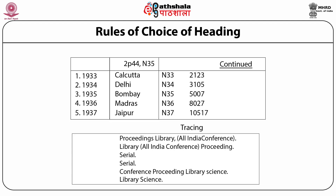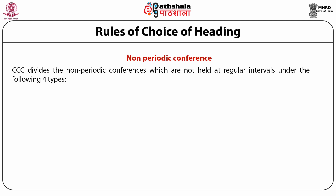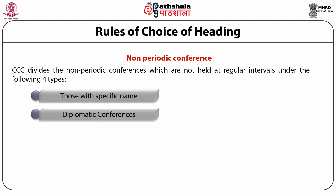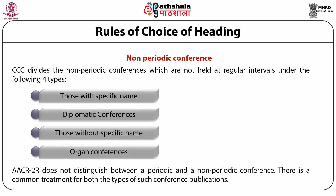The second type is the non-periodic conference. CCC divides non-periodical conferences — those not held at regular intervals — under four types: first, those with a specific name; second, diplomatic conferences; third, those without a specific name; fourth, organ conferences. AACR2R does not distinguish between periodical and non-periodical conferences, and there is a common treatment for both types of such conference publications.